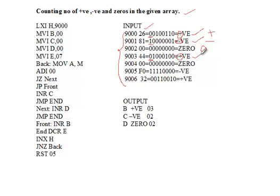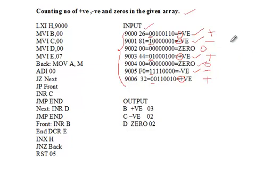The next number 00 — all zeros — is a zero. F0 written as 11110000 has MSB 1, so it is negative. Then 32, written as 00110000, has MSB 0, so it is positive.